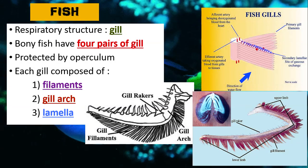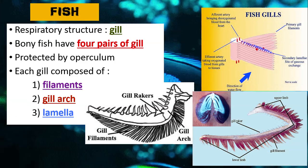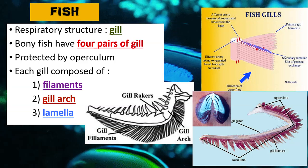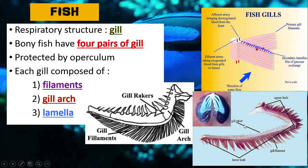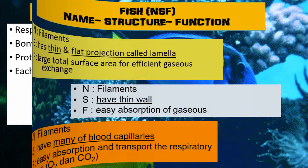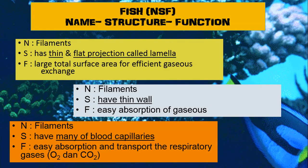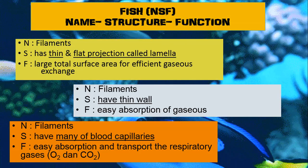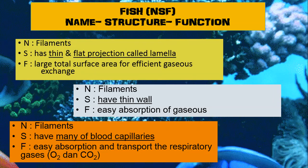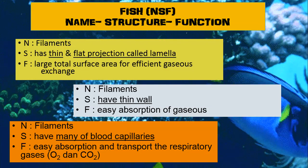Next, we discuss the fish respiratory structure and its adaptations. The respiratory structure consists of gills. Bony fish have four pairs of gills protected by the operculum, and each gill is composed of gill filaments, gill arches, and lamellae. Filaments have thin, flat projections — the lamellae — to increase the total surface area for efficient gas exchange. Filaments also have thin walls for easy absorption of gases, and many blood capillaries for absorption and transport of oxygen and carbon dioxide.